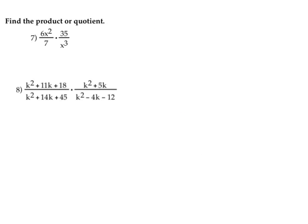In the following examples we are asked to find the product — not the quotient, only the product. So let's take a look at the first example: we have 6x squared over 7 times 35 over x cubed. Before we actually multiply anything, let's see if we can break this down into simpler terms first.